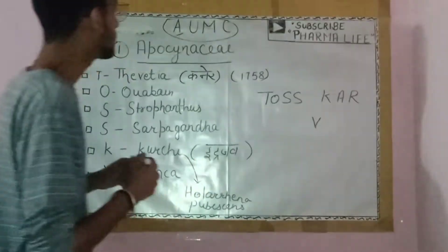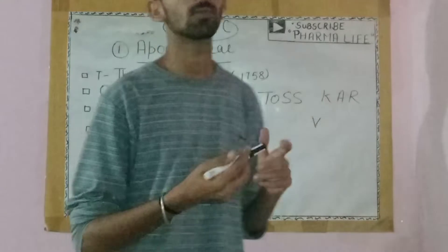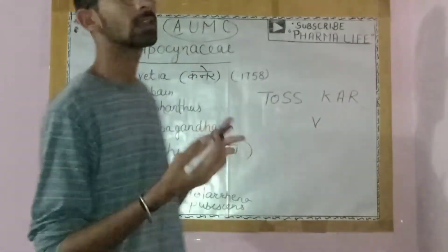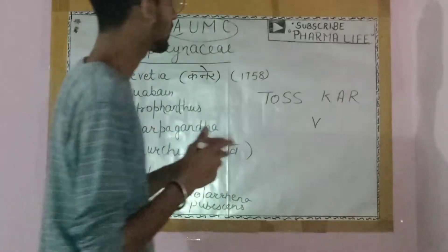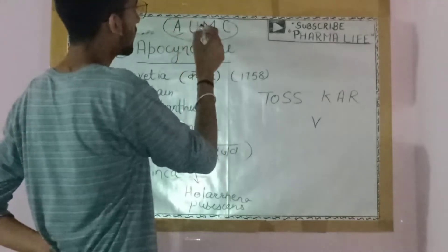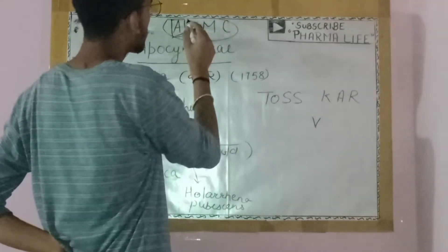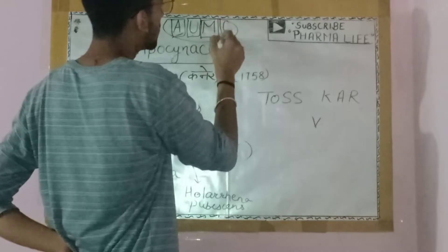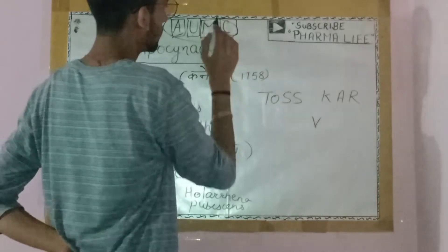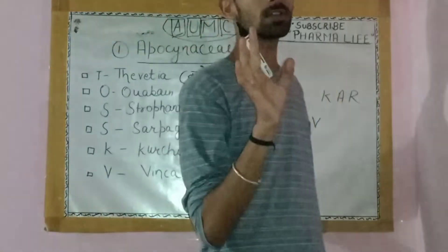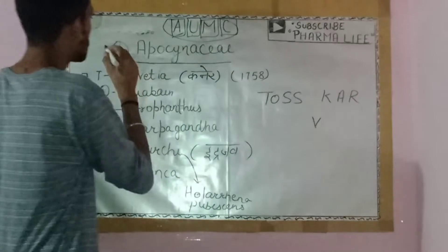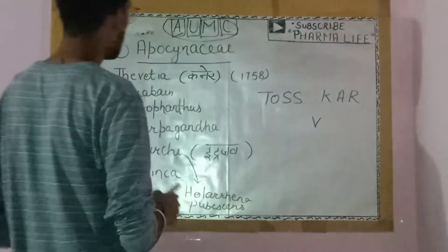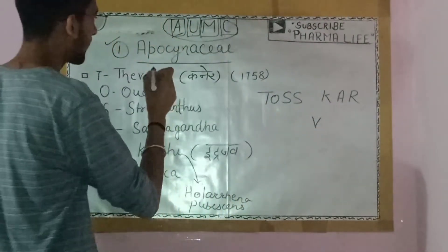In this video we talked about the mnemonics, we talked about the trick which we called AUMC — A for Apocyanation, M for Mite, A-C-C-C. This was the first thing we talked about: AUMC. So now we will talk about apocyanation.